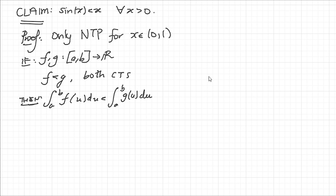let h equal g minus f, then h is positive everywhere and therefore the integral from a to b of h(u) du must be positive. And h(u) is g(u) minus f(u), so using the linearity of the integral you get the result.